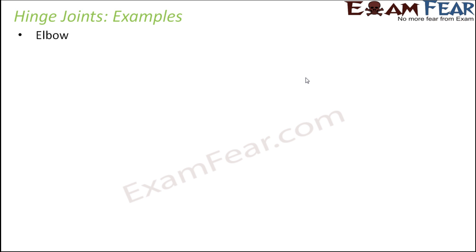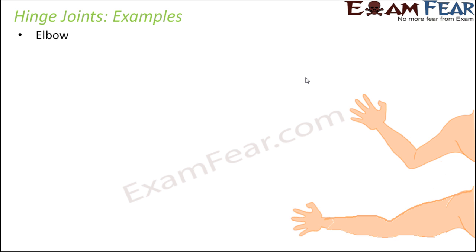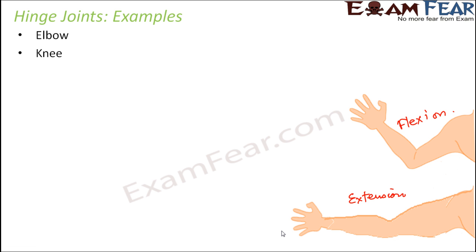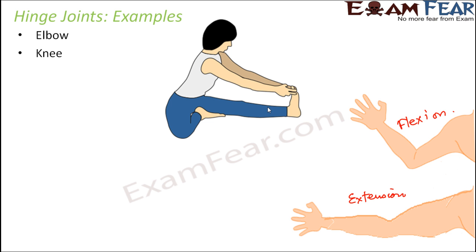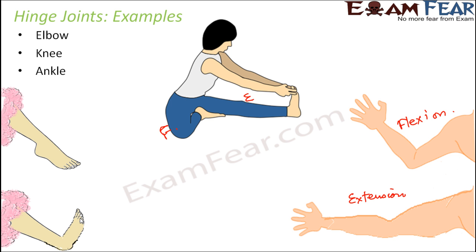Think of the elbow — from the elbow you can either make it straight, which is extension, or you can bend or fold it, which is flexion. Those are the only two possible movements at your elbow. The knee similarly: straightening is extension, folding is flexion. For the ankle also, when you make it straight that is extension and when you fold it that is flexion. Each of these — elbow, knee, and ankle — are examples of hinge joints.